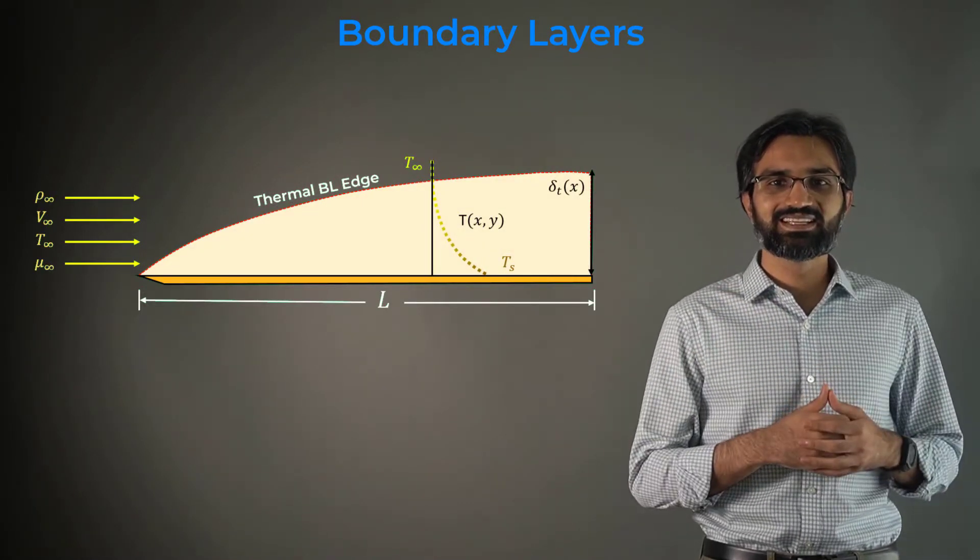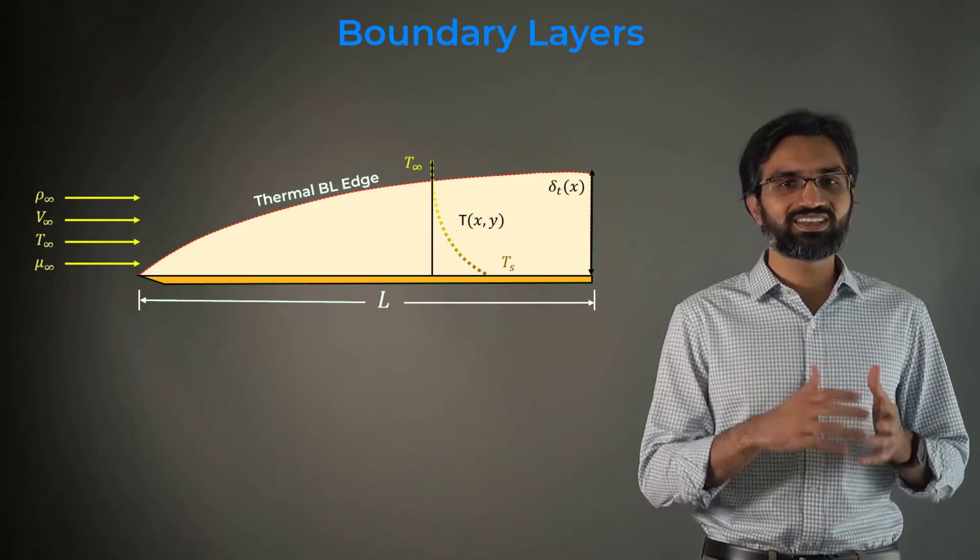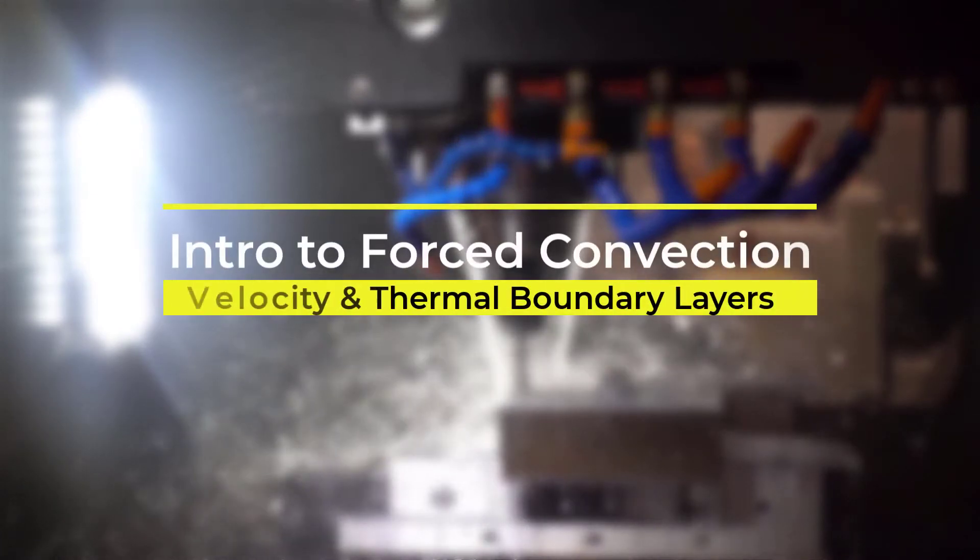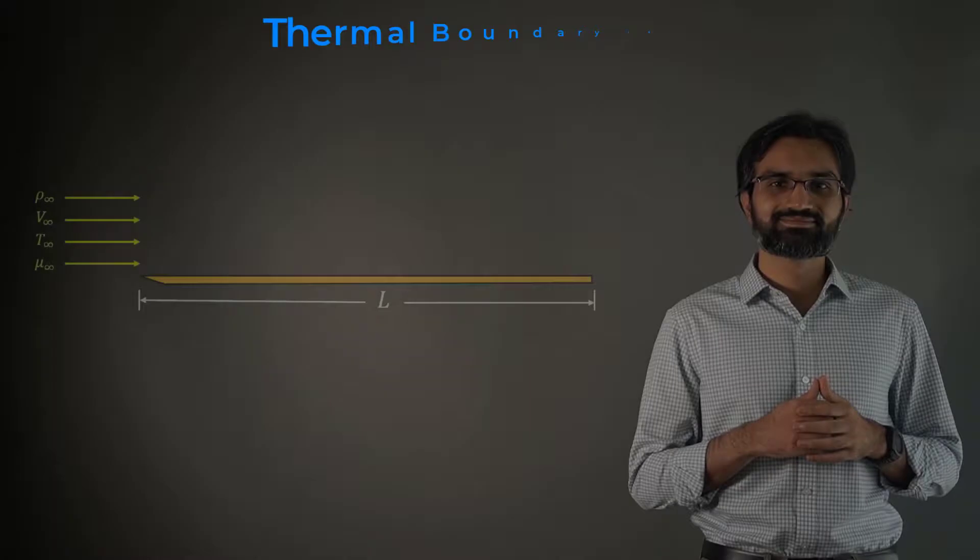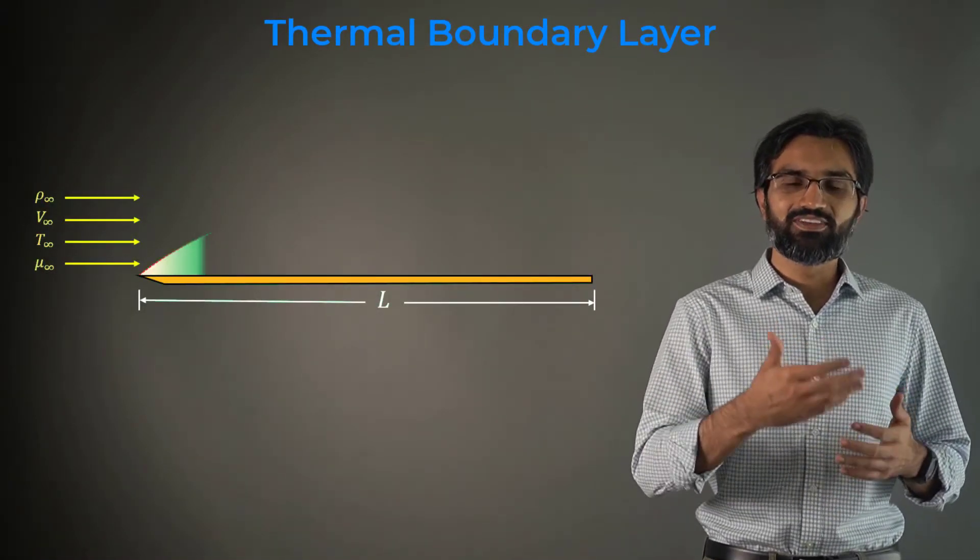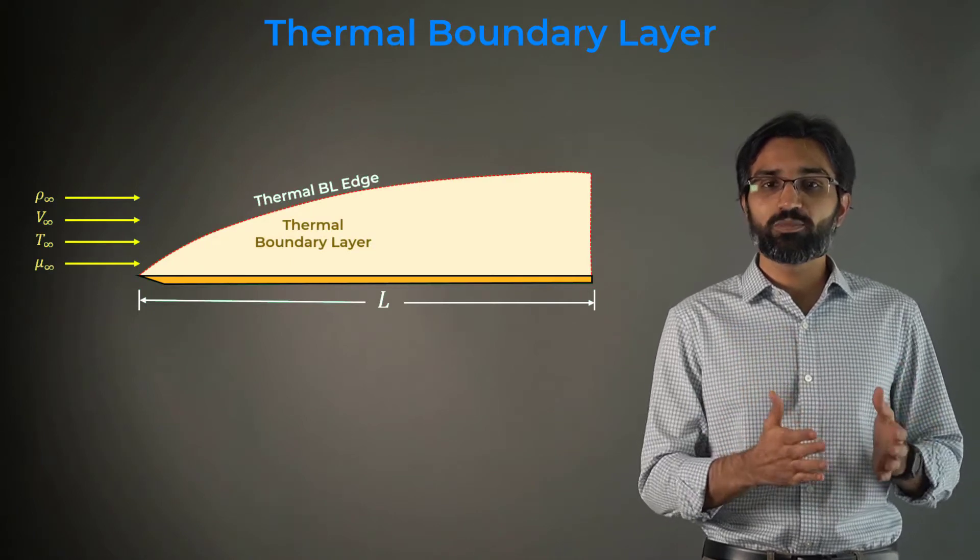In this lesson, we will learn about these velocity and thermal boundary layers. Let us take an infinitely long flat plate. When the thermal boundary layer is formed near the wall,